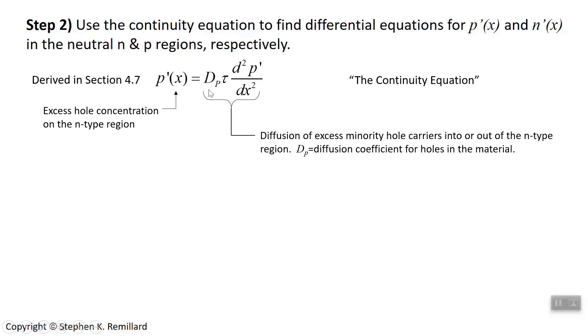you have this diffusion coefficient, remember, and the recombination time. Recombination time is tau. And so you have this product here, which together is actually the diffusion length squared. But that's constant stuff. This is property of material times the second derivative of the hole concentration with position. That's the continuity equation.